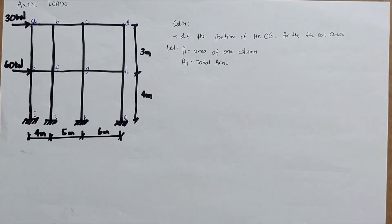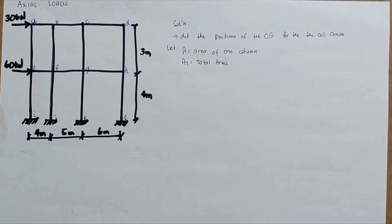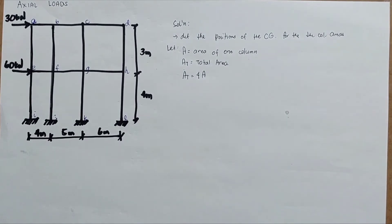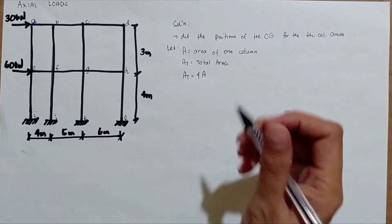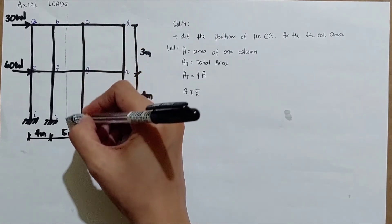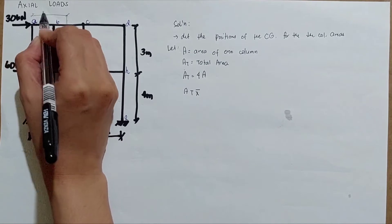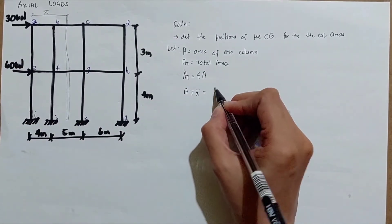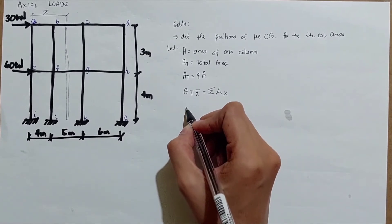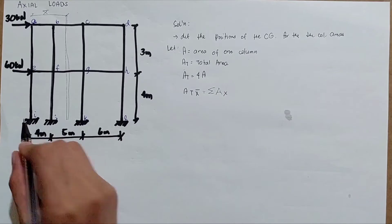Let 'a' be the area of one column. Since we assume all columns have the same area, we have 1, 2, 3, 4 columns, so the total area is equal to 4a. Using Varignon's theorem, we have: 4a × x̄ = summation of (area × x-distance). We assume x̄ is measured from the leftmost reference point.